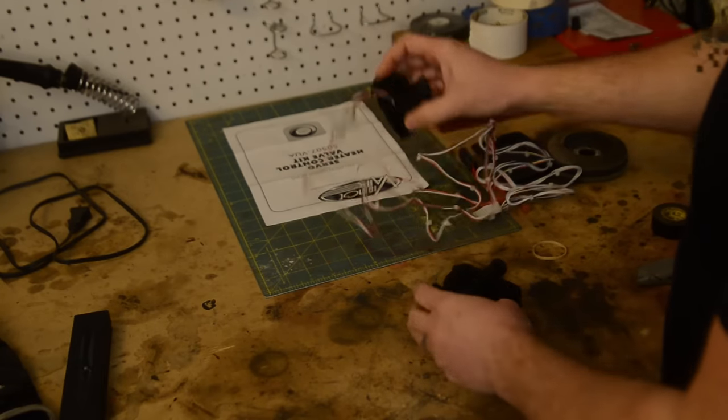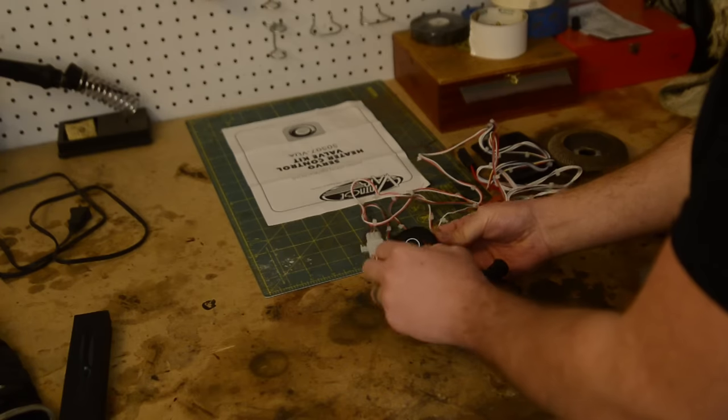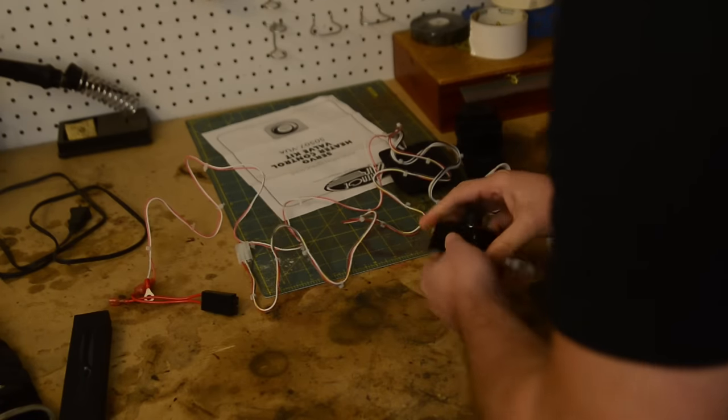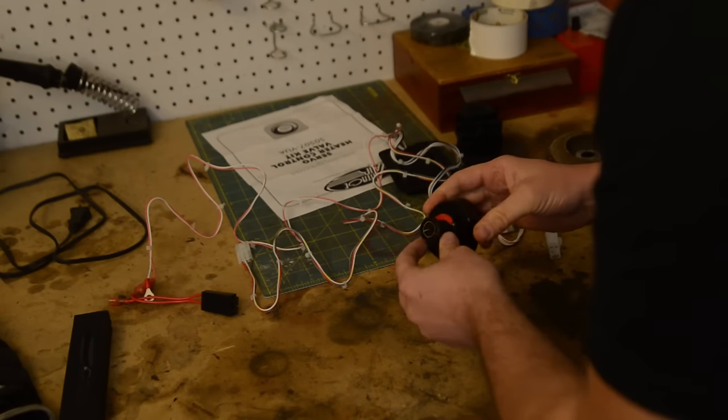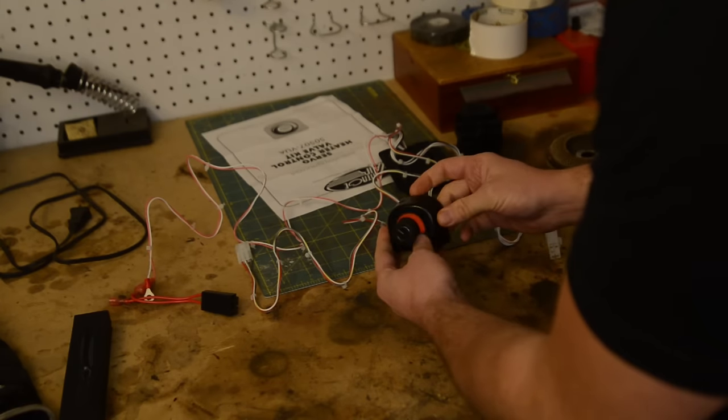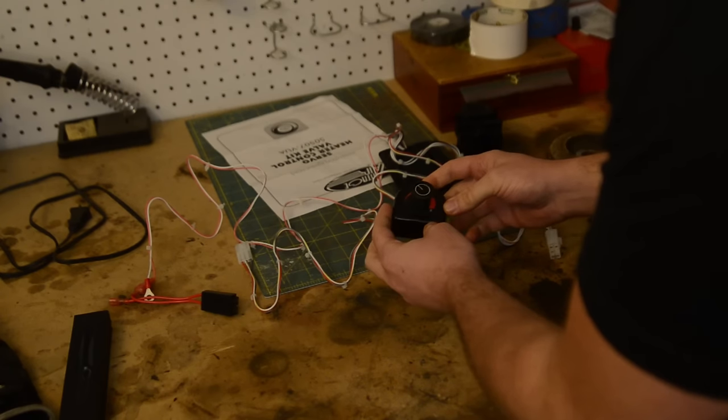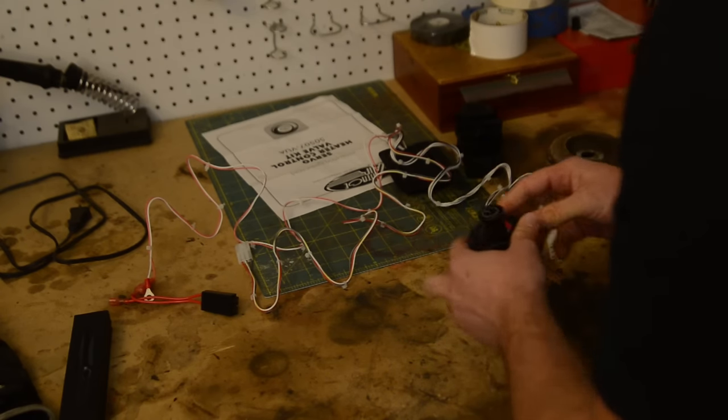So I got this from Tom's Bronco parts and this whole thing supposed to mount under the dash, but what I'm going to try to do is take this all apart and put this in the hole where the original pull knob was.